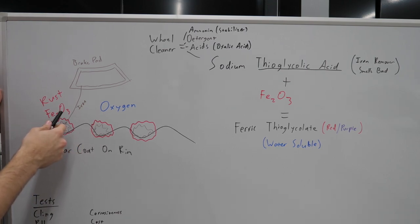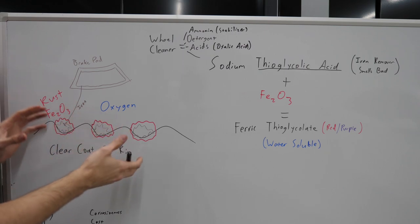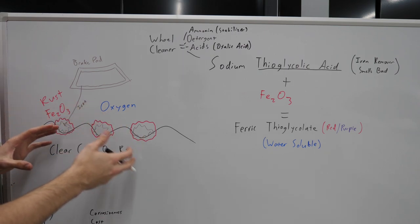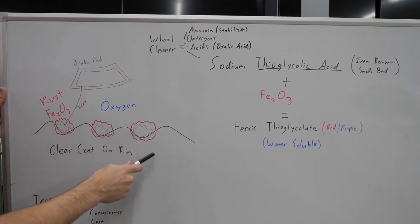So now you've got this really embedded iron oxide in your wheel and this is just going to continue to embed itself and be tougher and tougher to remove. And it looks unsightly, it's brown, it's spotty, it's all over. So we want to get rid of this, right?